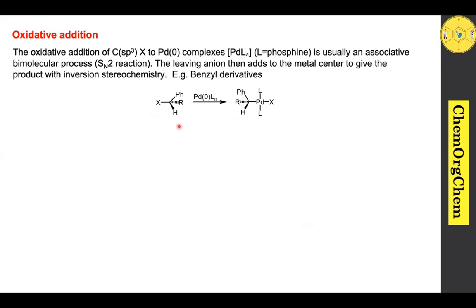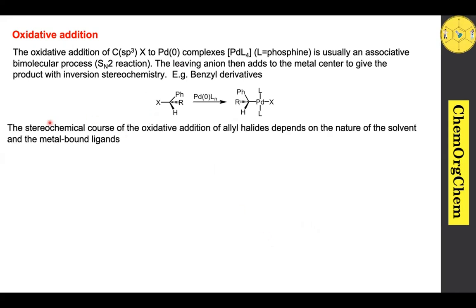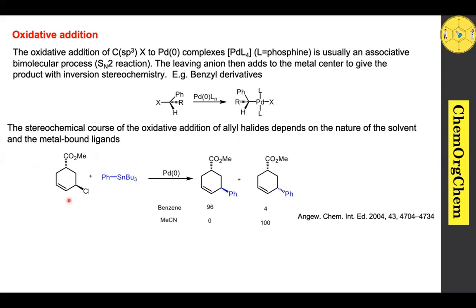Here you see this is a benzoyl derivative, and when used under oxidative addition conditions, it produces inversion of configuration. The stereochemistry of oxidative addition of allyl halides depends on the nature of the solvent. When this allyl halide reacts with organostannane under palladium(0) catalysis using benzene as solvent, it produces a product with retention stereochemistry, whereas using acetonitrile as solvent produces exclusively inversion stereochemistry, which clearly indicates that the nature of the solvent plays a huge role in this particular reaction.